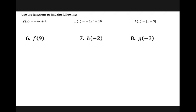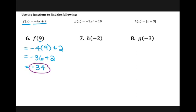These problems have three different functions listed at the top: F of x equals negative four x plus two, G of x is negative three x squared plus 10, and H of x is absolute value of x plus three. For number six, it says F of nine. Whatever is in the parentheses represents your input — what you are plugging in for x. So I'm going to take nine and plug it into my F function: negative four times nine plus two. Negative four times nine is negative 36 plus two is negative 34. So F of nine is negative 34.